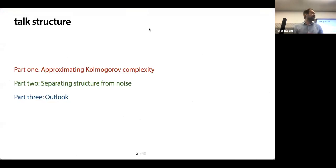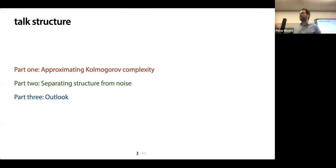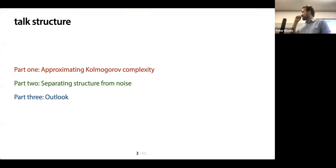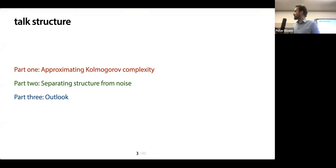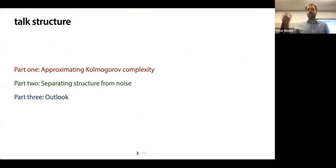Here's the plan for today. In part one, I'll talk about approximating Kolmogorov complexity, and that touches on quite a few questions and topics that came up yesterday. And in part two, I'll talk about the second paper, which is about separating structure from noise in a Kolmogorov complexity style.